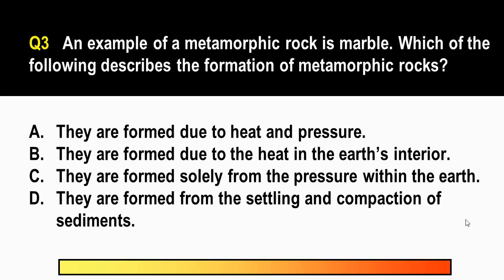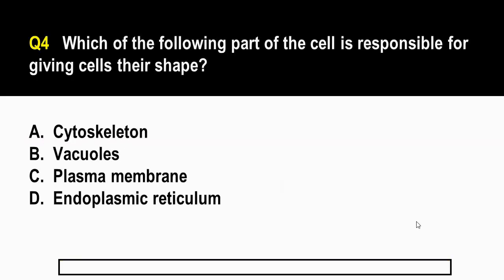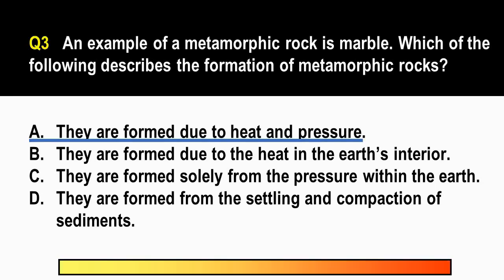The correct answer is letter A. Metamorphic rocks are formed due to heat and pressure. For letter B, it's incorrect because this is the process of formation for igneous rock. So igneous rocks are due to heat. Whereas for letter D, that's also incorrect because this would refer to the formation of sedimentary rocks. So sedimentary rocks are due to the settling, the deposition, and the compaction of sediments.